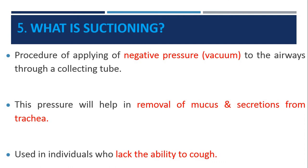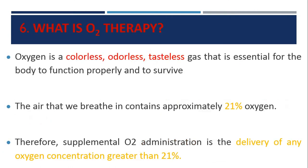A useful mnemonic for suctioning routes is SON: S means suction via endotracheal tube or tracheostomy tube, O means oropharyngeal — through the mouth — and N means nasopharyngeal — through the nose. These are the three routes by which suctioning can be performed.